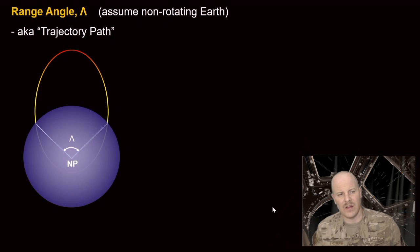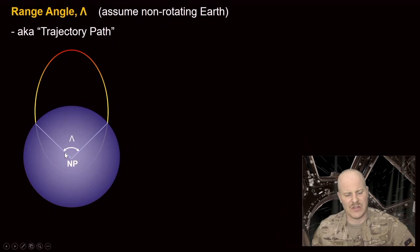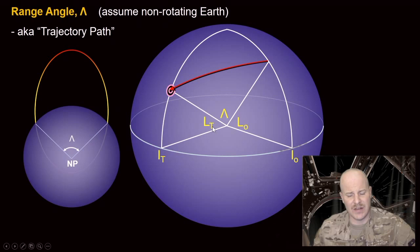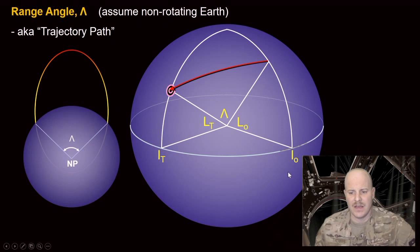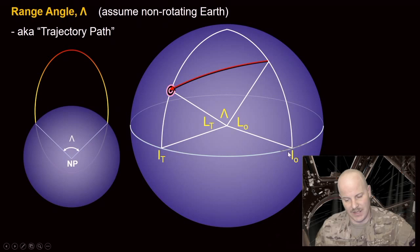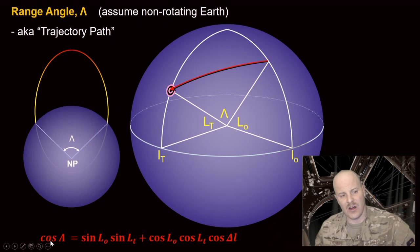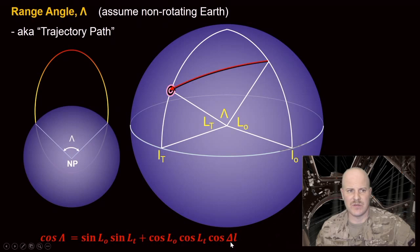Our first geometric term is range angle, lambda — the trajectory path or range angle. It's essentially an angular distance defining our launch site to our impact site. To define this quantity we need the latitude and longitude of both the target and launch site. Capital L represents latitude: LT is the target latitude, LO is the origin latitude. Little LO is the longitude of the launch site, little LT is the longitude of the target. The equation for range angle relates the latitudes of origin and target and the difference in longitude between those two points.